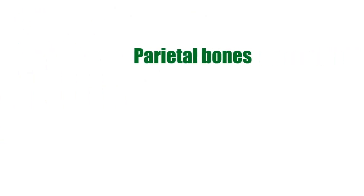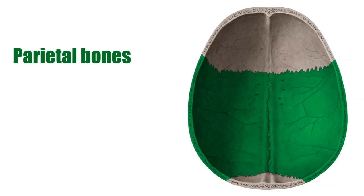The bones are roughly square-shaped and lie under the vertex, which is the uppermost surface of the head. Each has a concave internal surface and a convex external surface.